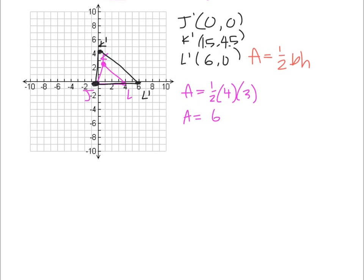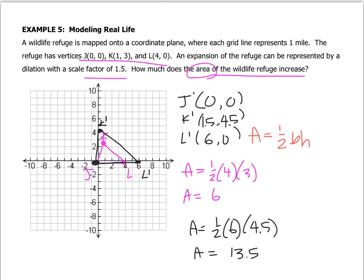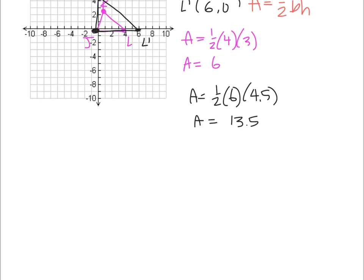Now let's find the area of the new refuge. So the area of the new one, it's 1/2. The new base is 6 and the new height is 4.5 because it's 4.5 boxes tall. So that gives me an area of 3 times 4.5. Get our calculators powered up. 13.5. So it says, how much does the area increase? So 13.5 minus 6 is 7.5. So that would be 7.5 square miles.